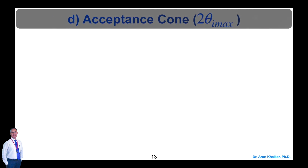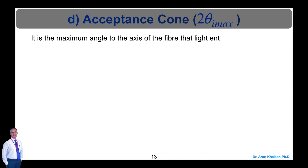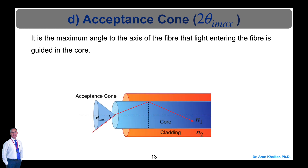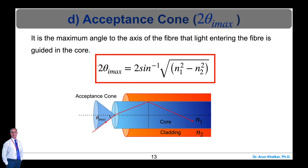The next important parameter of Optic Fibre is the acceptance cone, which is 2 × theta_i_max. In three dimensions, all rays within the acceptance angle that are guided in the core form a cone. Therefore, the acceptance cone is: 2 × theta_i_max = 2 × sin⁻¹(√(N1² − N2²)), where N1 is the refractive index of the core and N2 is the refractive index of the cladding.